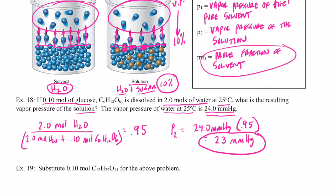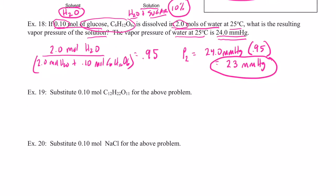It doesn't make a difference whether the solute is glucose or table sugar, as long as I have 0.10 moles of that substance and 2.0 moles of water, the vapor pressure will be lowered by the same amount. Let's try it: 0.10 moles of sucrose — the mole fraction would be the same: 2.0 moles of water still in the numerator.